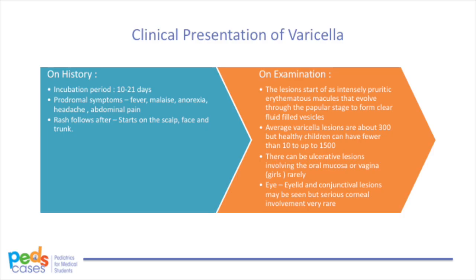On examination, the lesions start off as intensely pruritic erythematous macules that evolve through the papular stage to form clear fluid vesicles, and then within a few days crust over. The average number of varicella lesions is about 300, but healthy children can have fewer than 10 to up to 1,500. Rarely, there can be ulcerative lesions involving the oral mucosa or vagina in girls. Eyelid and conjunctival lesions are seen, but serious corneal involvement is very rare.